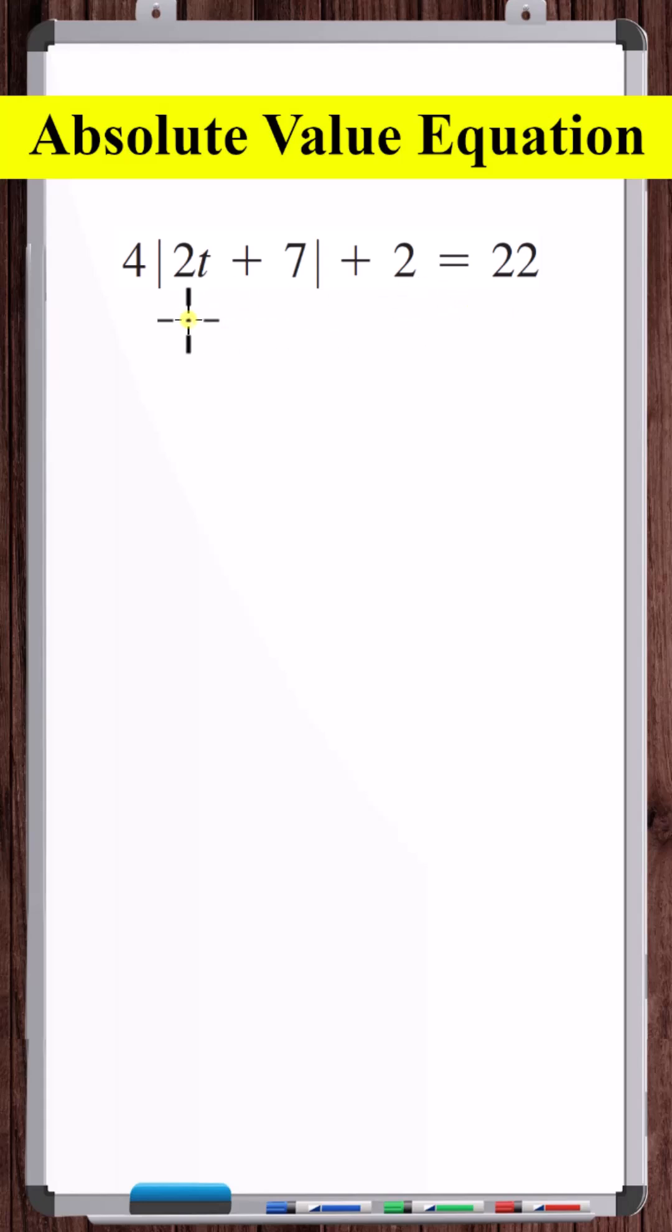Let's solve this absolute value equation. What we want to do is isolate the absolute value on one side and constants on the other side of the equation.